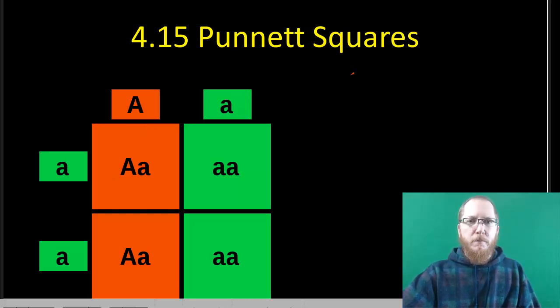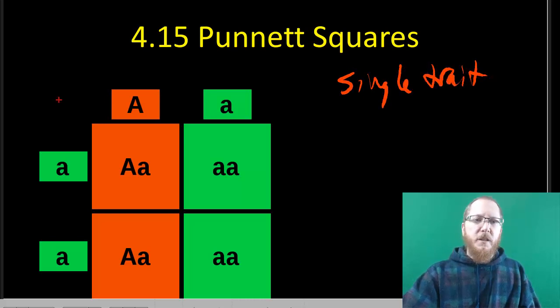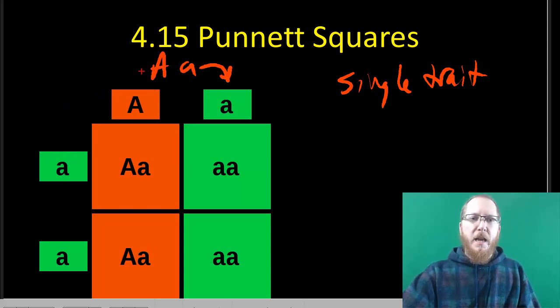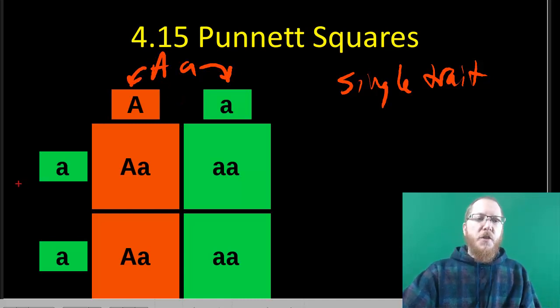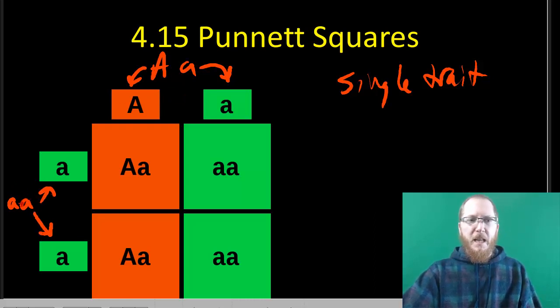Starting off, we're just going to look at a single trait. When we do this, you're going to see the top and the sides are going to be our potential gametes. One of the parents had a big A and little a, so it can give either the little a or the big A via either the egg or the sperm. The other parent is homozygous recessive, so it can give just a little a. We then put those on the top and on the left-hand side, and then we just fill in the boxes where they intersect.